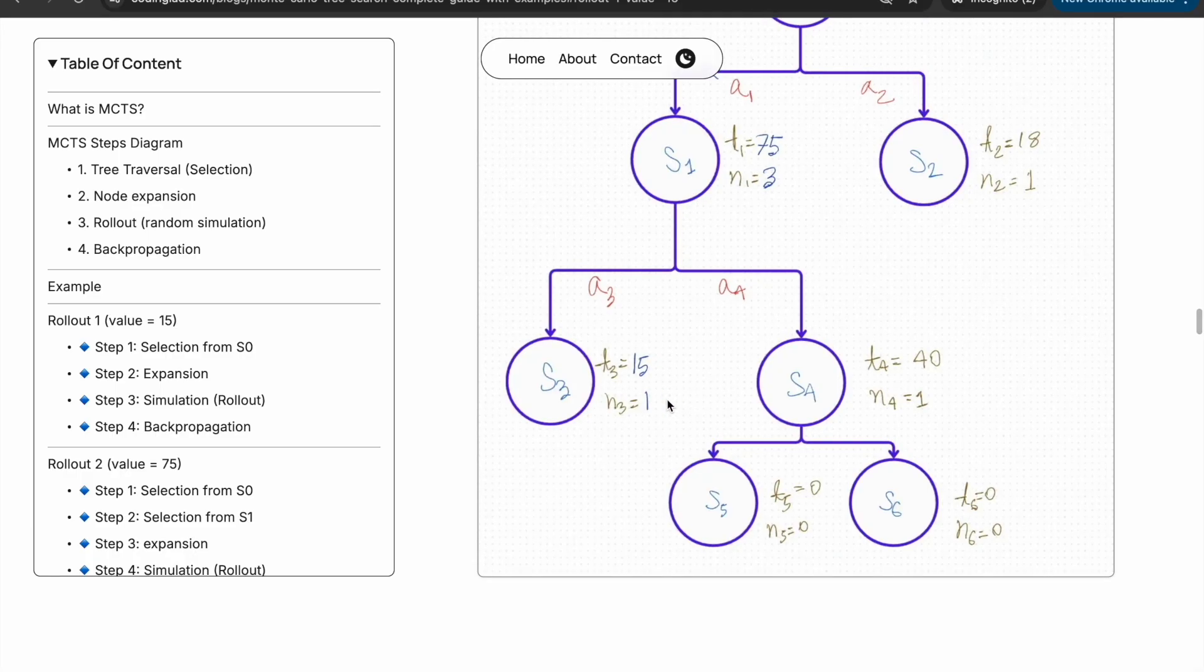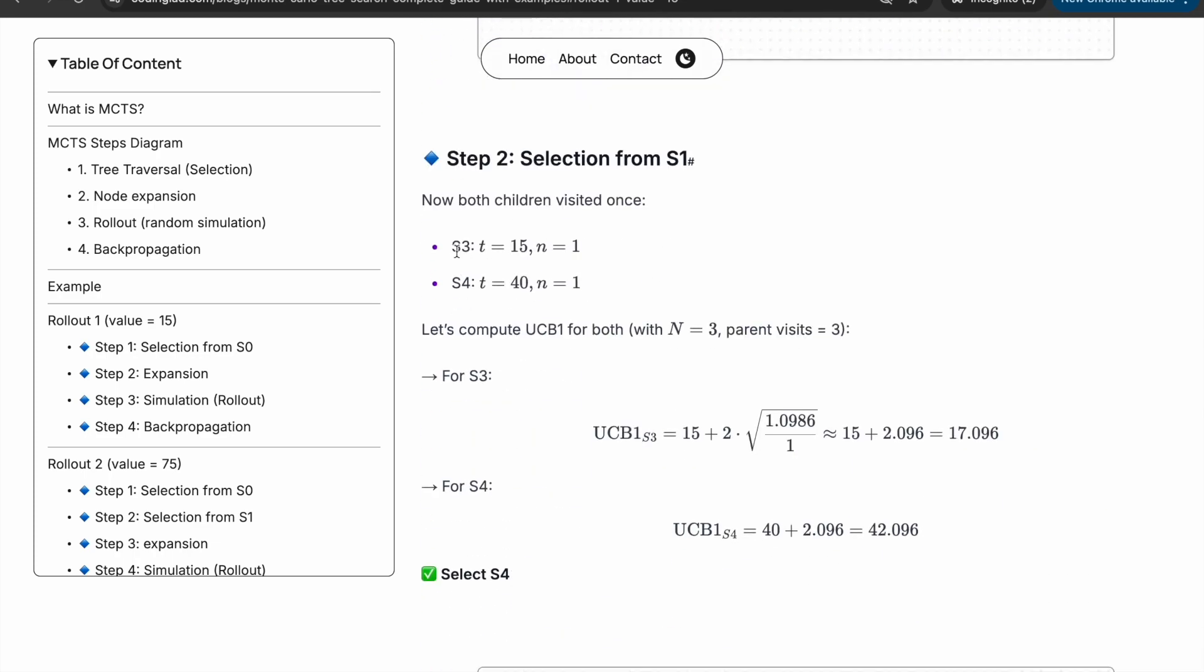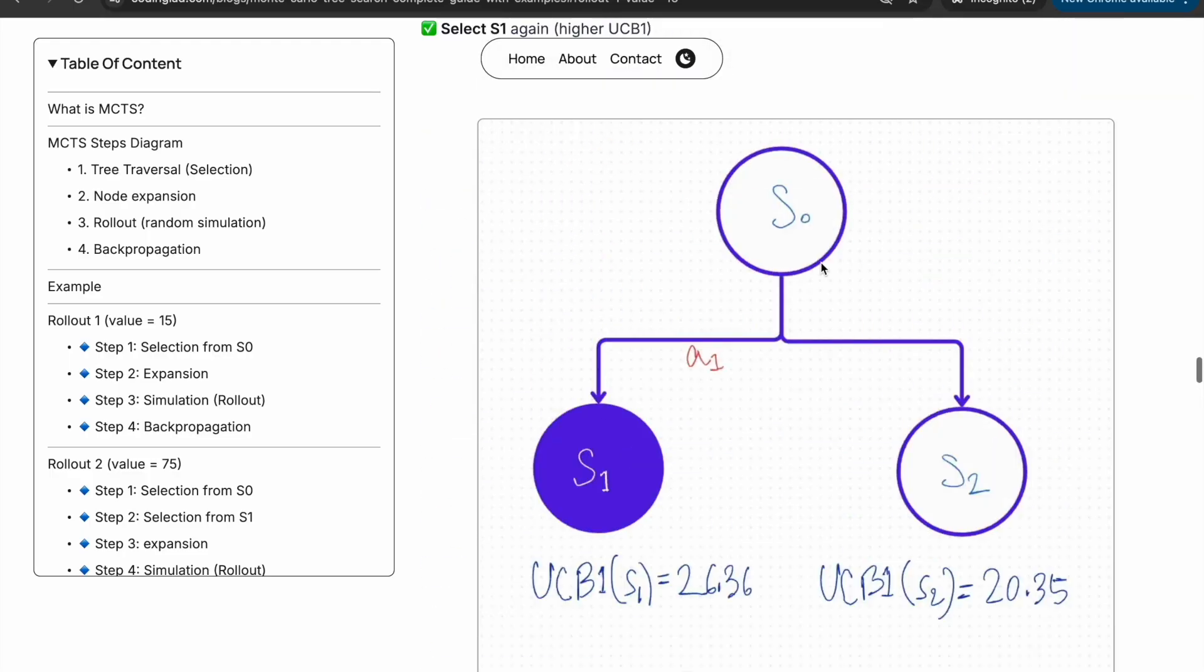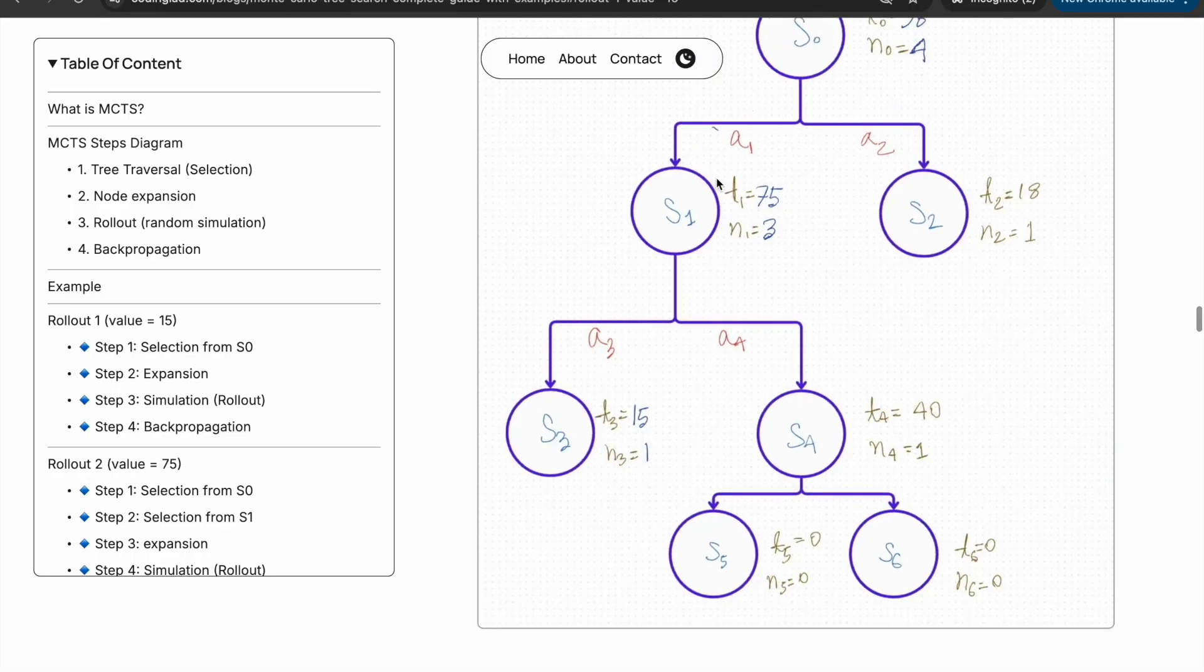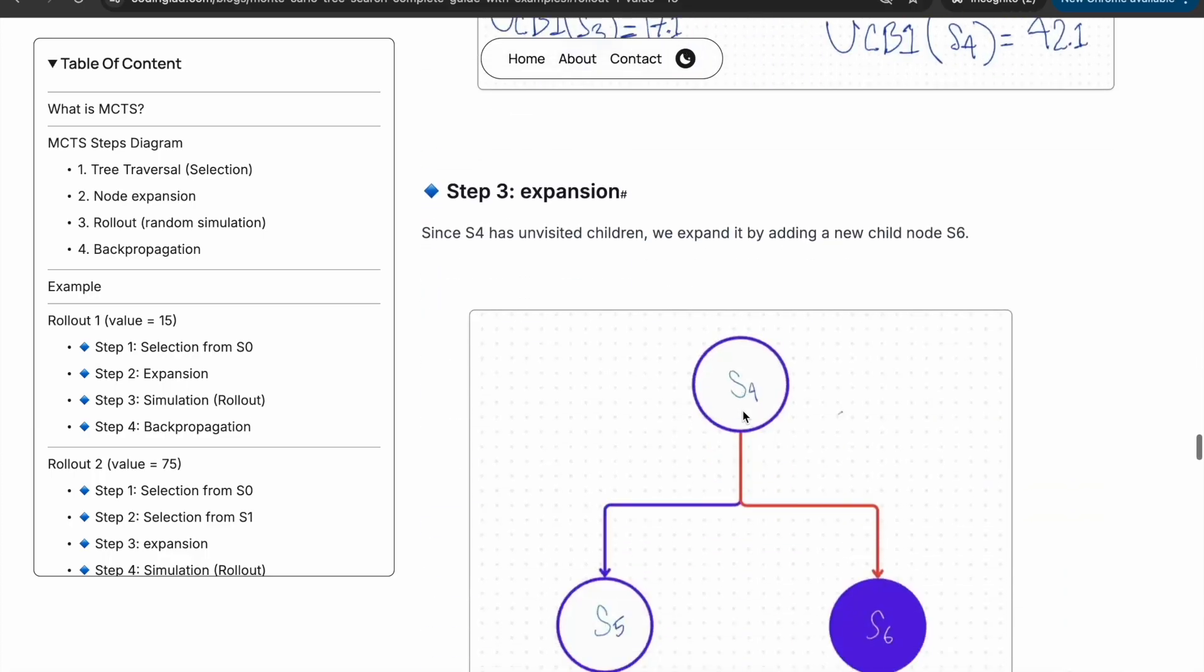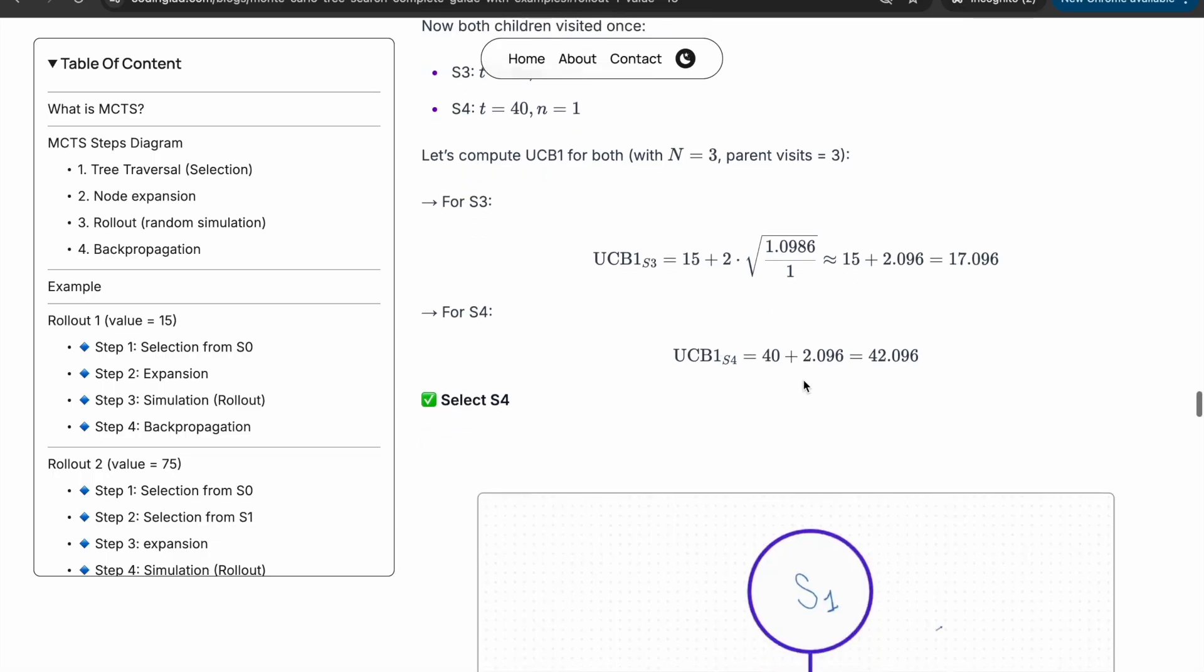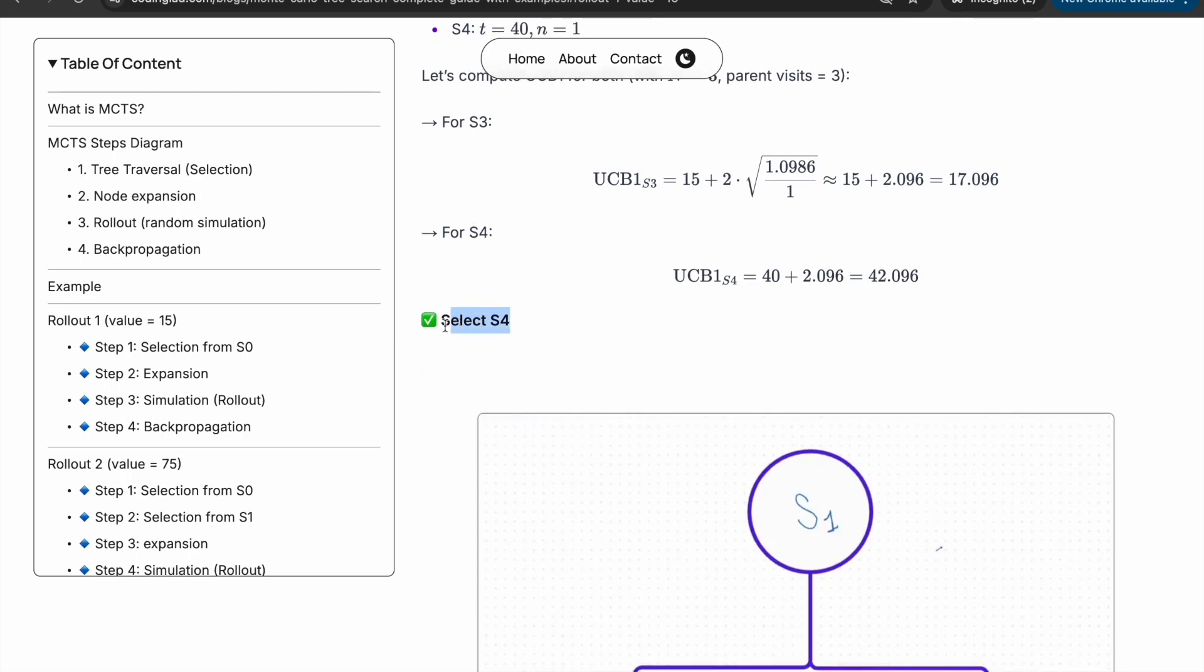If you see carefully, s1 has no unvisited children. That's why we will again use the UCB1 formula to select another node. We will calculate UCB for s3 and s4. Here capital N is 3 because the parent node for s3 and s4 is s1, and s1 has n value equal to 3. If we calculate UCB1 for s3 and s4, you can see that s4 has higher UCB1 value. That's why we are selecting s4.